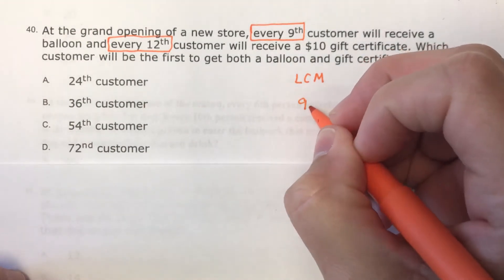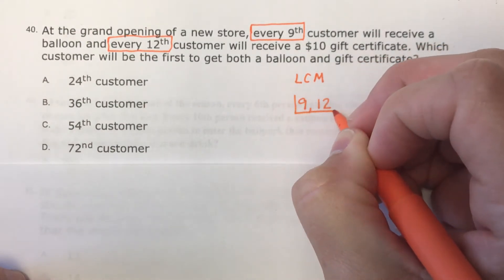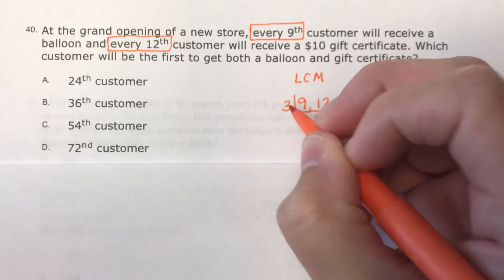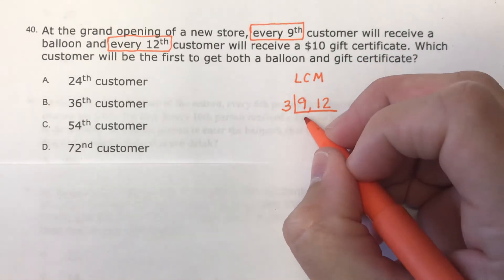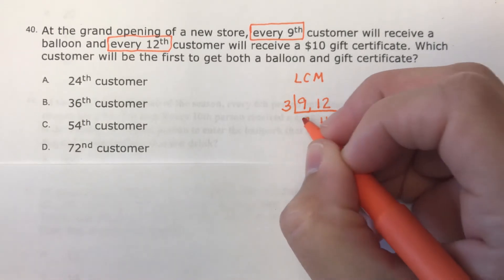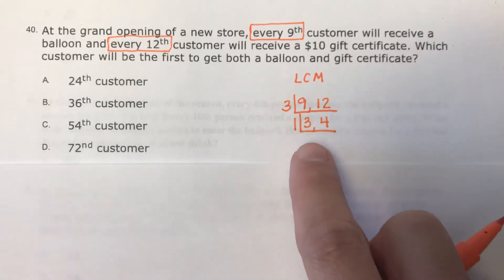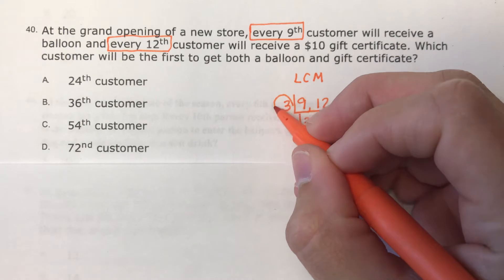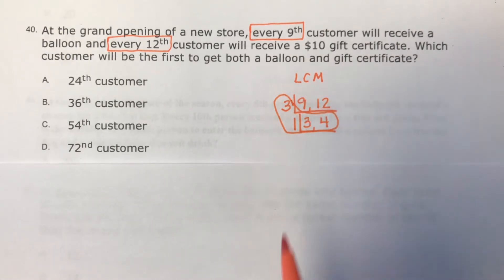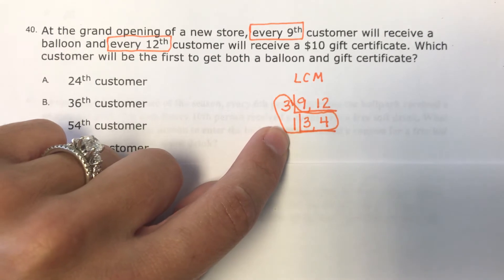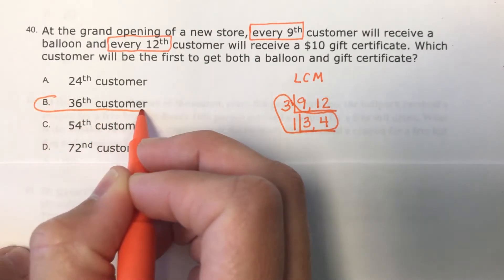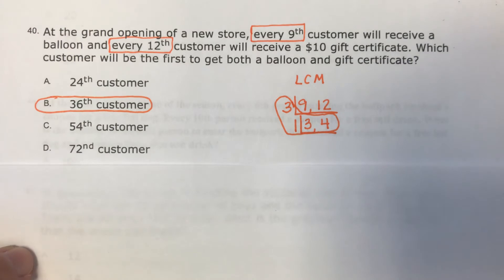We use our birthday cake. What is a number that goes into both 9 and 12? That would be 3. So 9 divided by 3 is 3, and 12 divided by 3 is 4. The only thing that goes into 3 and 4 is 1. When I get that 1 on the outside, I'm done. Since it's LCM, I do the side and the bottom — multiply them. 3 times 1 is 3, times 3 is 9, times 4 is 36. So the 36th customer is going to be the first one to get both prizes.